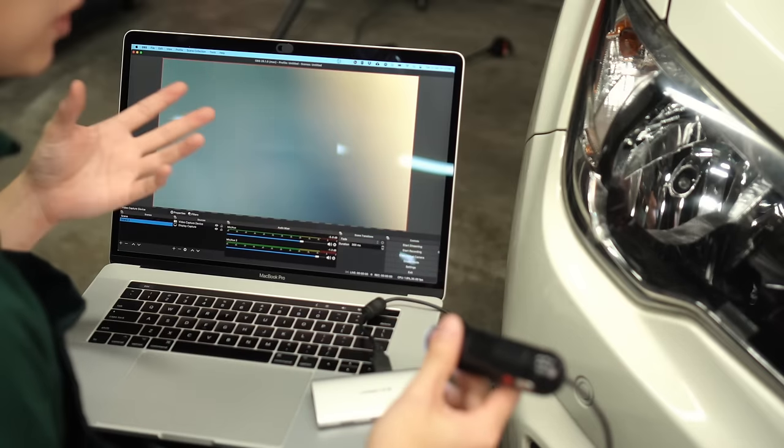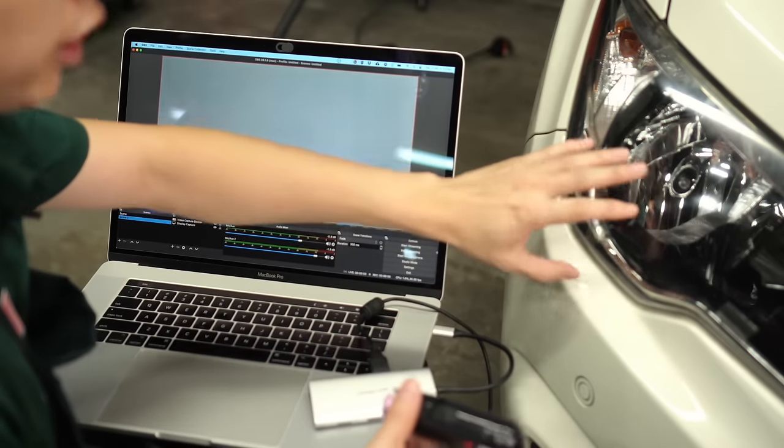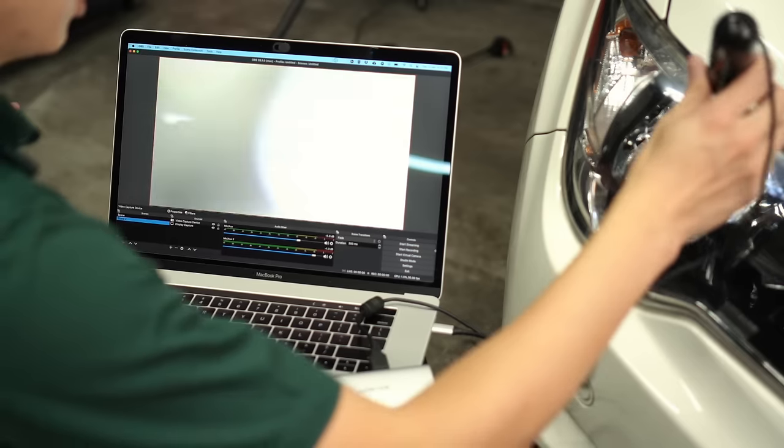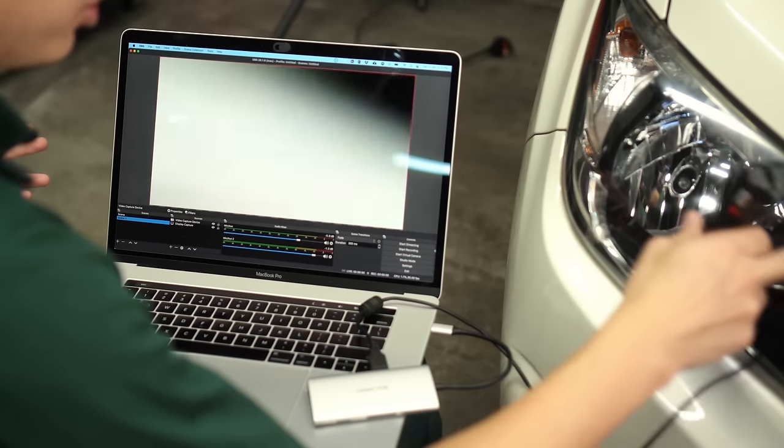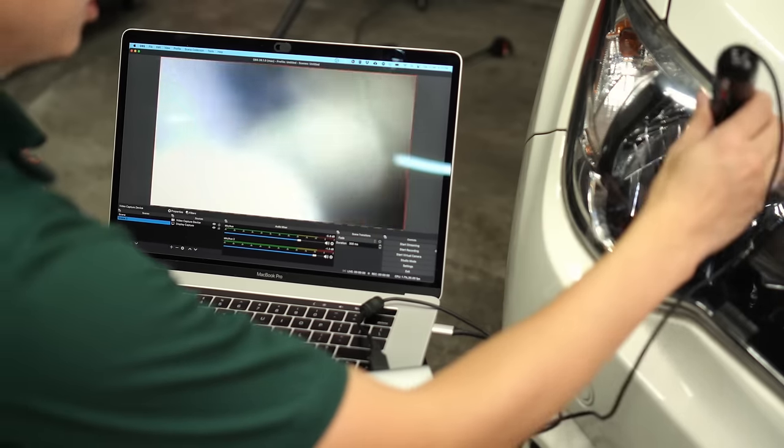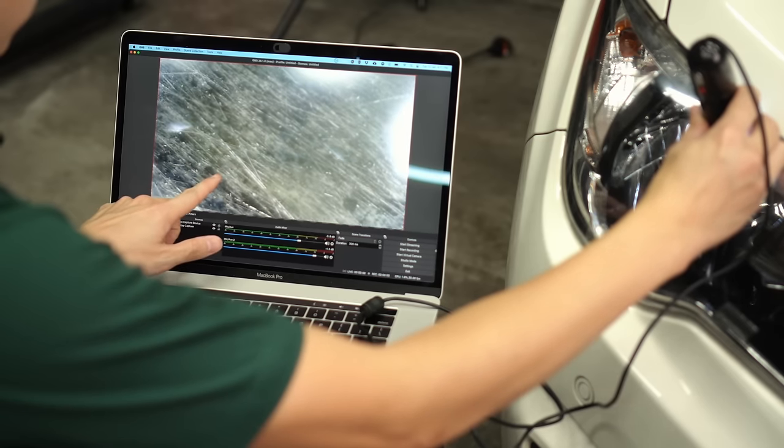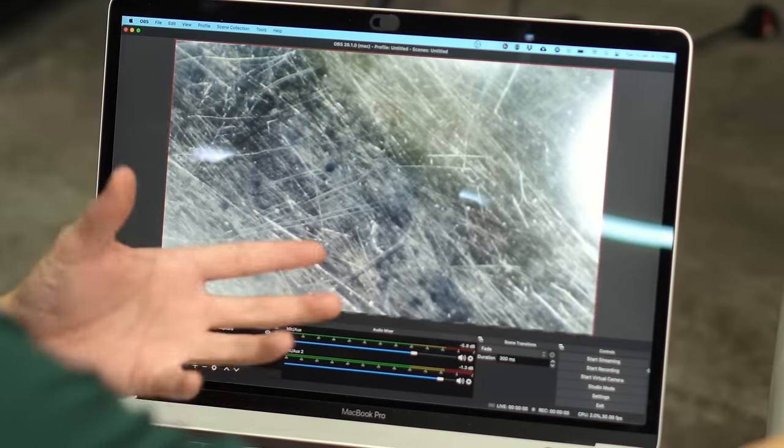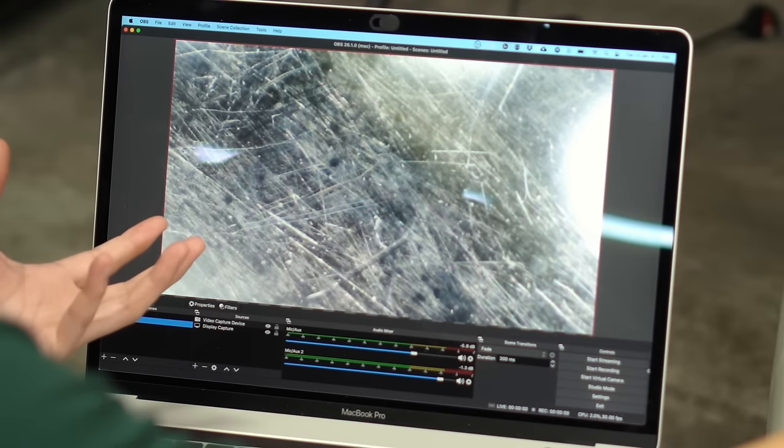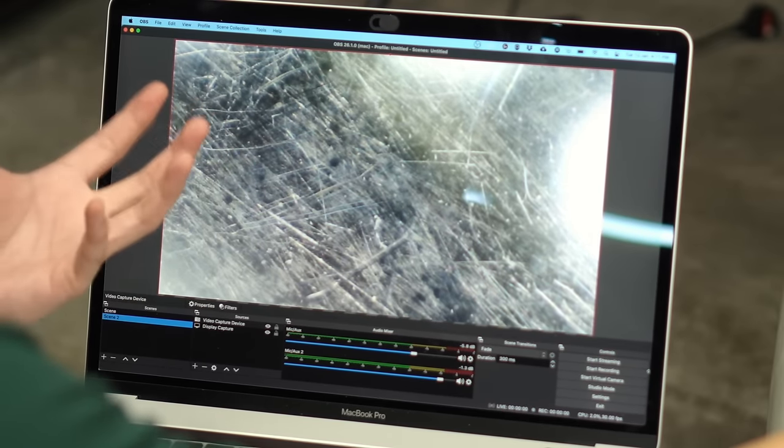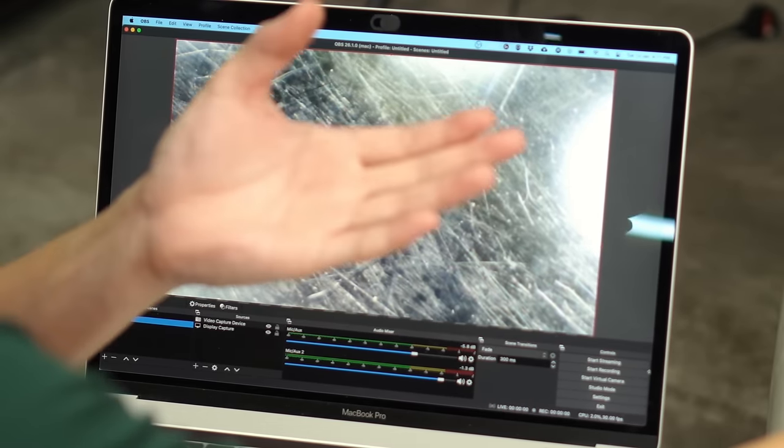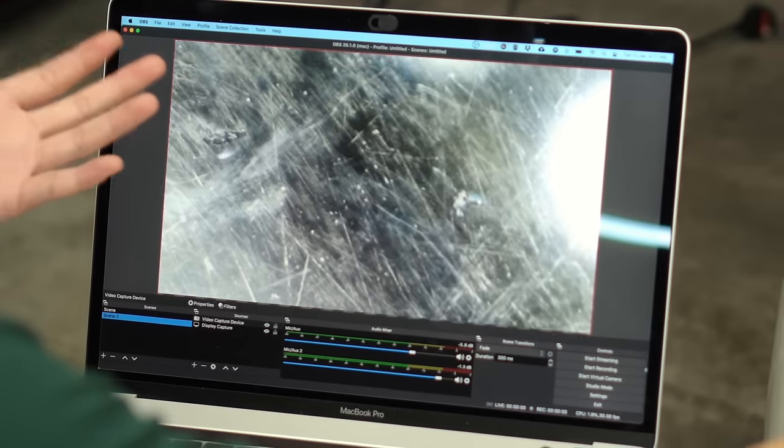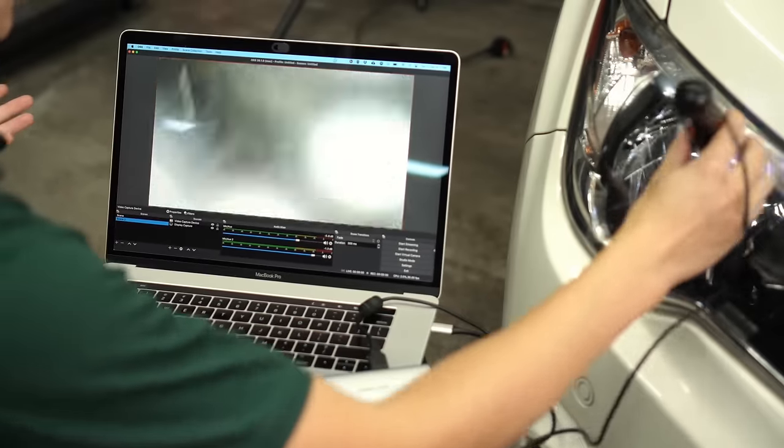I'm going to show you the difference between oxidized clear coat and relatively healthier clear coat with a USB microscope. On the side where the clear coat has failed on the top part of this headlight, you can see there are plenty of scratches. This is because the clear coat has already failed and it's not protecting the bare plastic polycarbonate from scratching and abrasion.